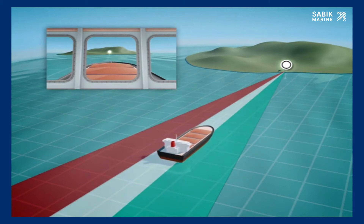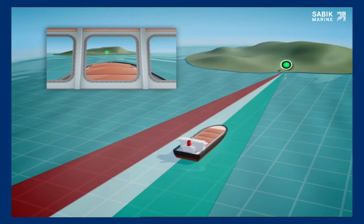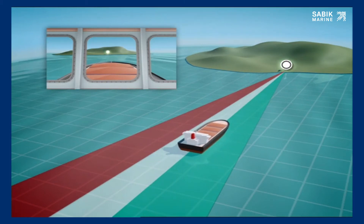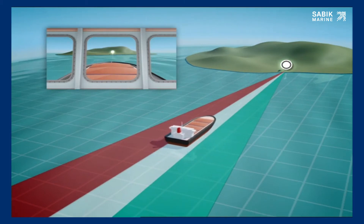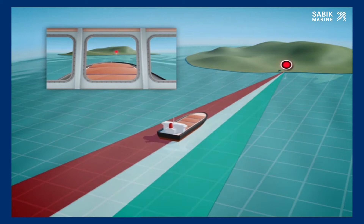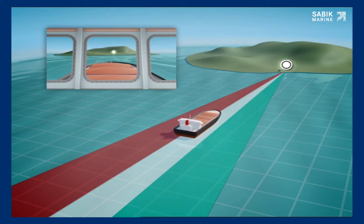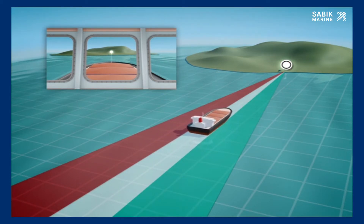A sector light is a shore-based light which shows a different colour when viewed from different angles at sea. For maximum certainty in all kinds of weather, it is best to use only three colours: red, white and green.